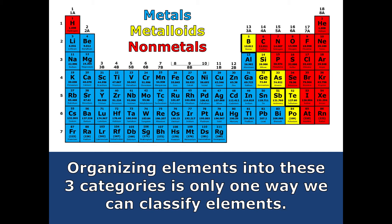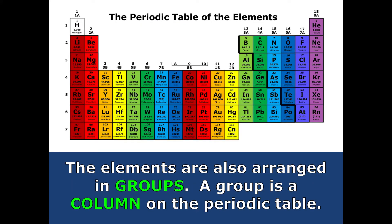Organizing these on the periodic table — when Dmitri Mendeleev did this, it's one way that made a lot of sense to him when he organized the periodic table. As a review, we have these groups on the periodic table. Groups, columns, families — all the same thing. GFC is an acronym to remember that they mean the same thing. These are the vertical groups that go up and down on the periodic table.